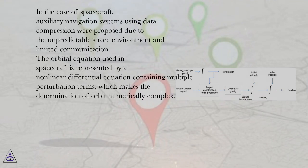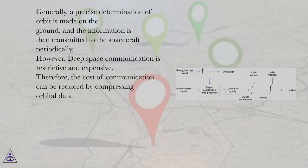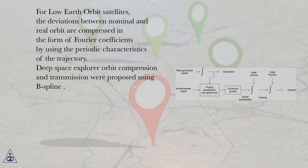In the case of spacecraft, auxiliary navigation systems using data compression were proposed due to the unpredictable space environment and limited communication. The orbital equation used in spacecraft is represented by a nonlinear differential equation containing multiple perturbation terms, which makes the determination of orbit numerically complex. Generally, a precise determination of orbit is made on the ground and the information is then transmitted to the spacecraft periodically. However, deep space communication is restrictive and expensive, so the cost of communication can be reduced by compressing orbital data. For low-Earth orbit satellites, the deviations between nominal and real orbit are compressed in the form of Fourier coefficients by using the periodic characteristics of the trajectory. Deep space explorer orbit compression and transmission were proposed using B-Spline.